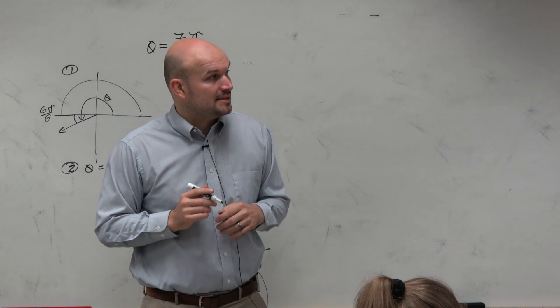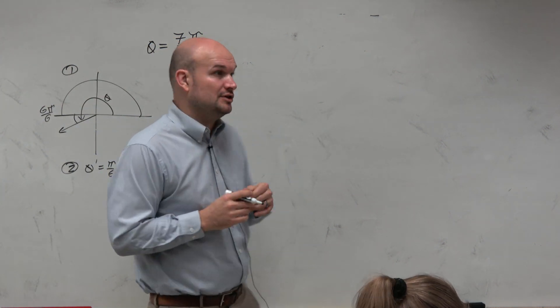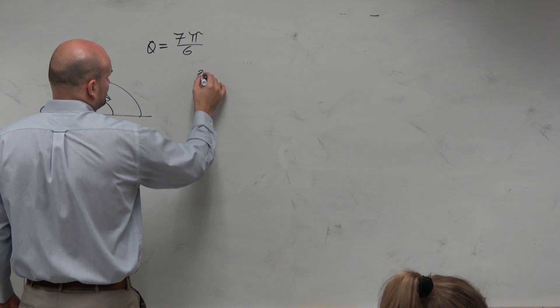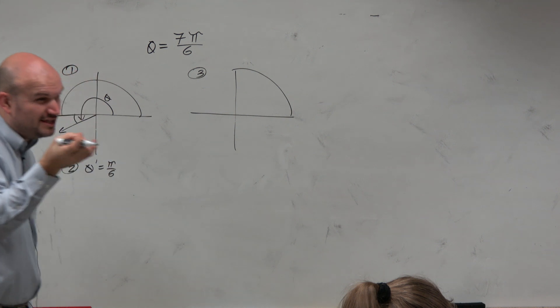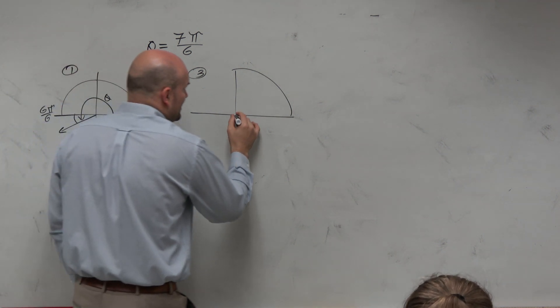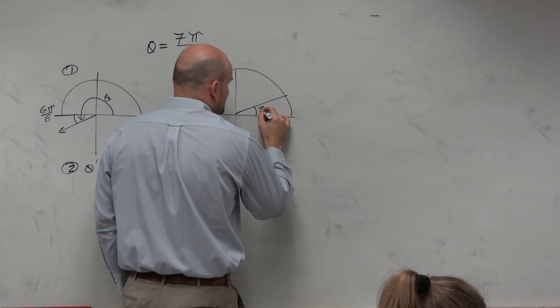Now, what I'm going to want to do, step number three, is identify that point on the unit circle. So I go to my first quadrant on the unit circle, because that's really the only thing you need to know. And I know that the first angle, which is pi over 6,